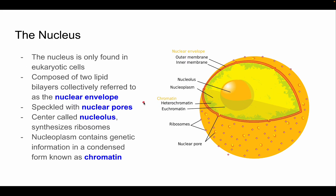Let's talk about the nucleus first. The nucleus is only found in eukaryotic cells. It's composed of two lipid bilayers collectively referred to as the nuclear envelope. The nuclear envelope is speckled with nuclear pores — which is how things get in and out of the nucleus.